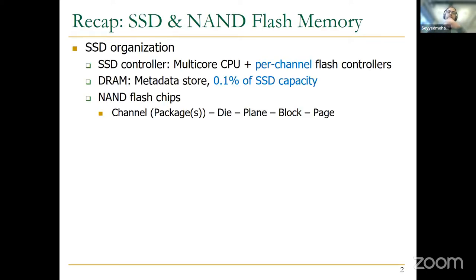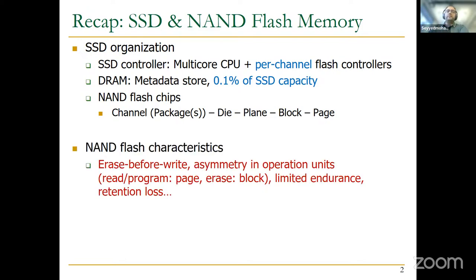As a very quick recap: we learned about SSD organization. We have an SSD controller which consists of multi-core CPUs and per-channel flash controllers, each servicing several NAND flash chips connected to the same channel. We also have a DRAM in the SSD used to store metadata and as a write buffer. The capacity of this DRAM is usually 0.1% of SSD capacity. Each NAND flash chip consists of several dies, each die has several planes, and then many blocks, and each block has many pages.